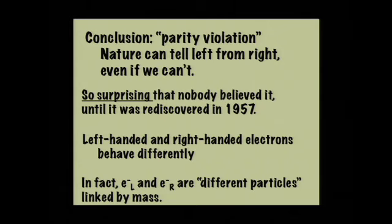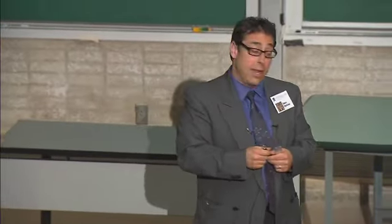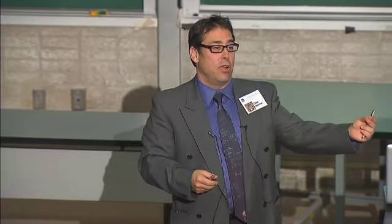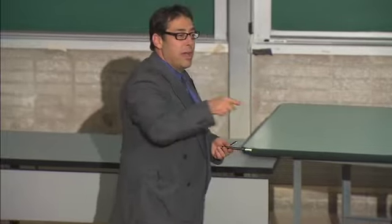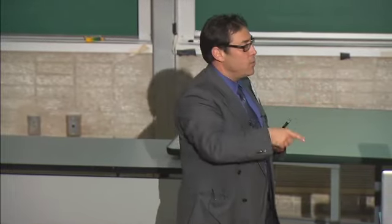It turns out that left-handed and right-handed electrons behave differently, and that radium was emitting more left-handed electrons than right-handed electrons because of the way that weak interactions work — which we'll learn next week. When things decay, they emit left-handed electrons exclusively, not right-handed electrons. So nature knows the difference between left-handed particles and right-handed particles. In fact, the thing we call an electron is actually two completely different particles — it's just that they can turn into one another by emitting another particle.